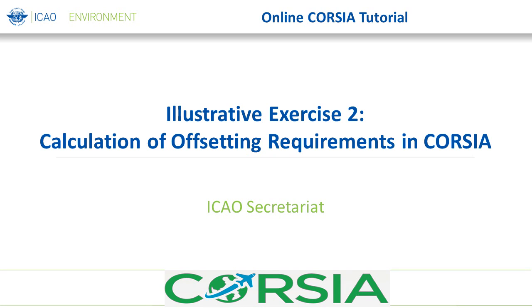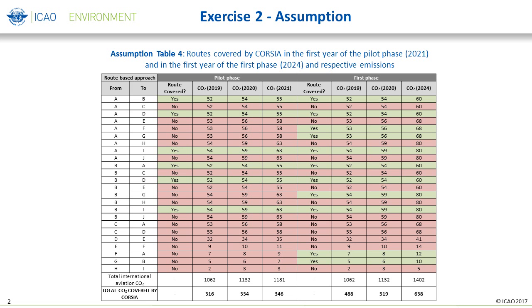Illustrative exercise number two focuses on calculating and distributing the offsetting requirements in CORSIA. Offsetting requirements are determined by calculating the baseline CO2 emissions for different years, the sector growth factor for different years, the CO2 emissions and offsetting requirements for an aircraft operator, as well as examples for offsetting costs.